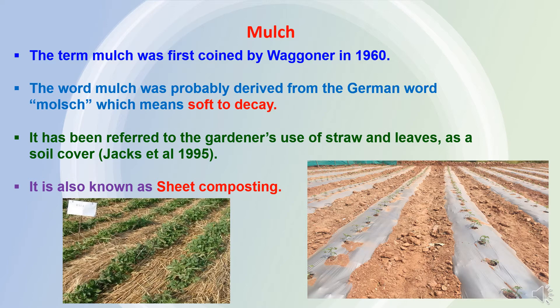It means mulch refers to crop residue, straws, and shredded leaves to cover the soil for the purpose of soil conservation, soil moisture preservation, and control of soil erosion. Mulching is also known as seed composting.